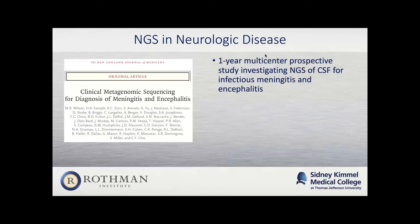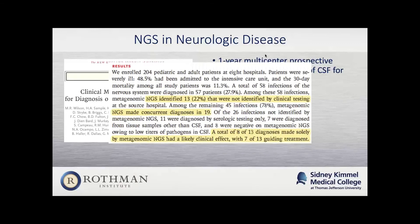Along those lines, a slightly larger trial — a one-year multi-center prospective study looking at NGS of the cerebrospinal fluid for infectious meningitis — again showed that NGS was able to identify many infections not identified through clinical testing or culture. Treatment based on this information had a clinical benefit for many of these patients.